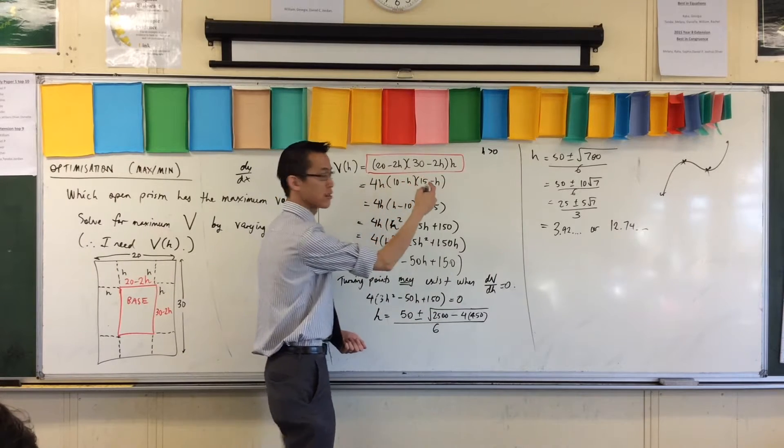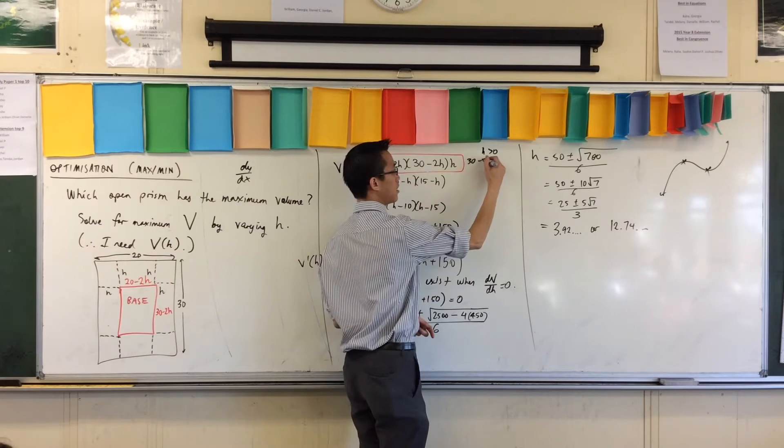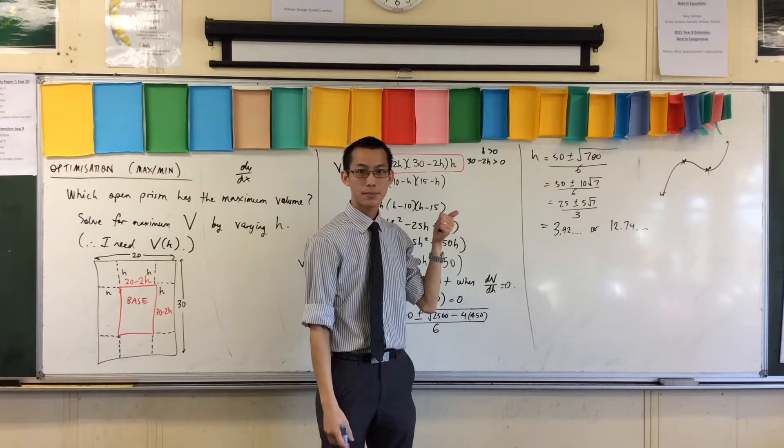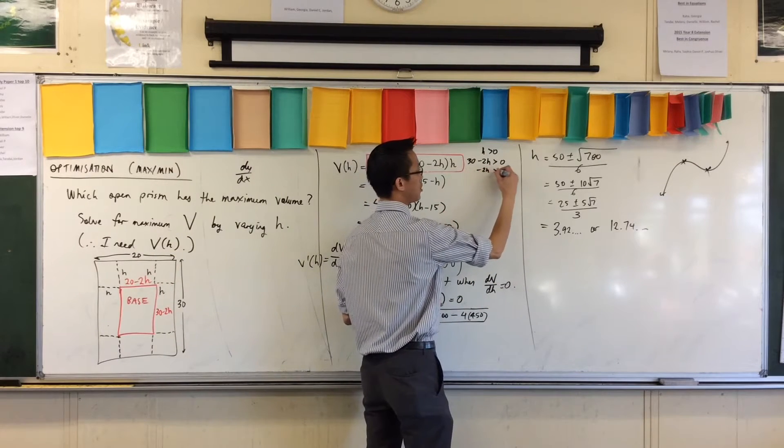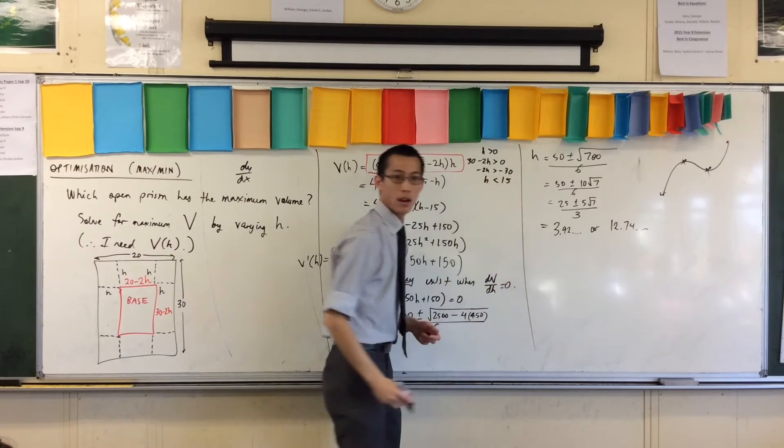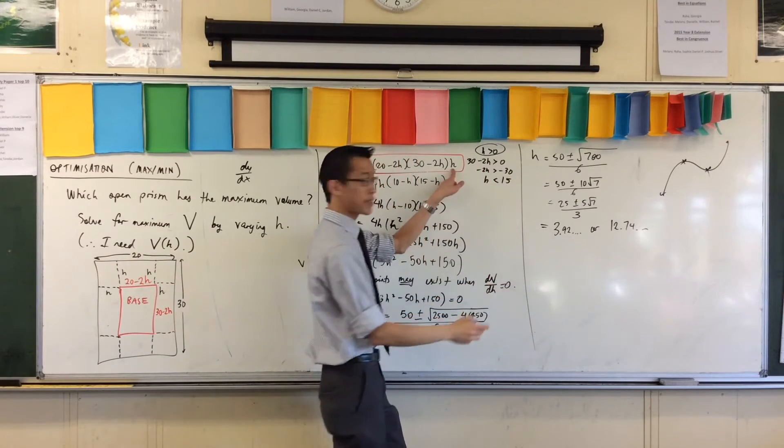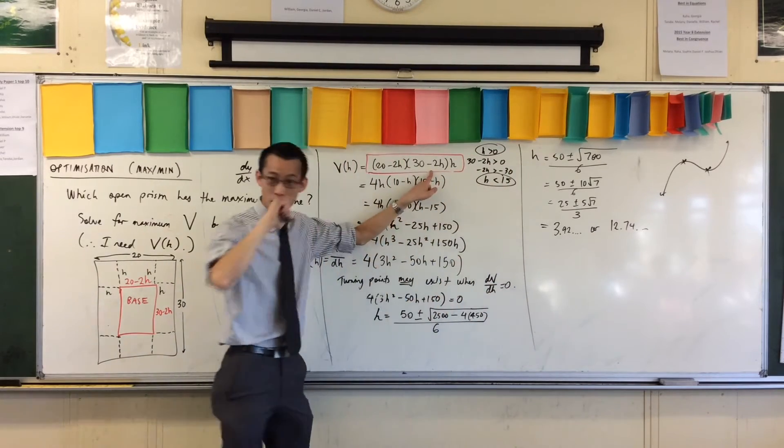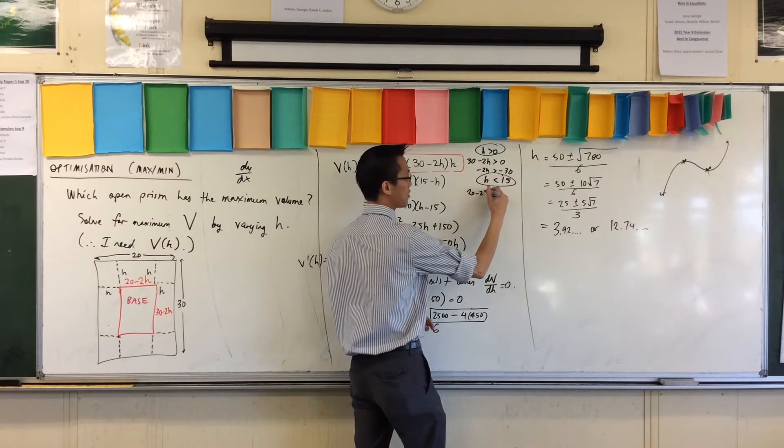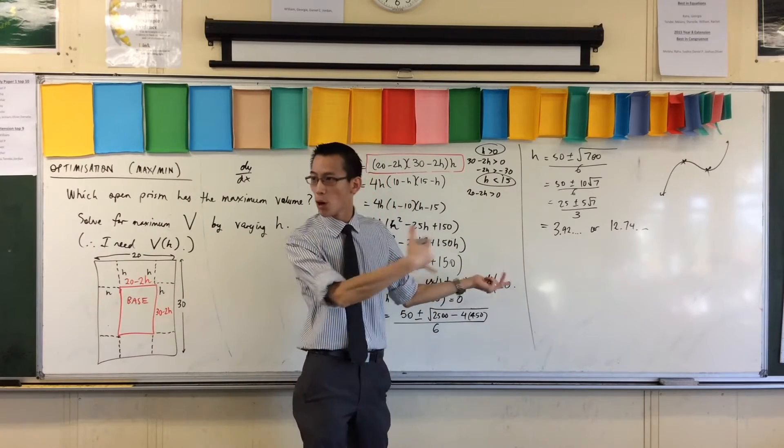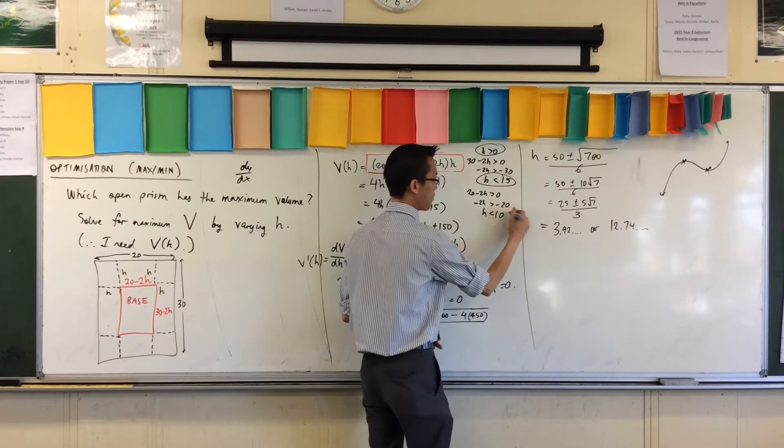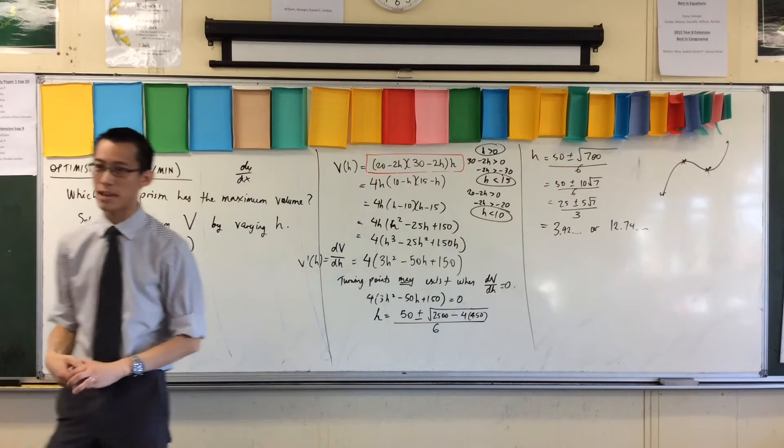20 take away 2H. Sorry, actually, I'm going to do this one first. 30 take away 2H. That's also got to be positive. But when you go ahead and solve that guy, what happens? You go minus 2H is greater than minus 30. And then you divide by a negative number, which turns your inequality around. So I've got one restriction from this guy. I've got another restriction from this guy. But I have one more. Notice this, right?